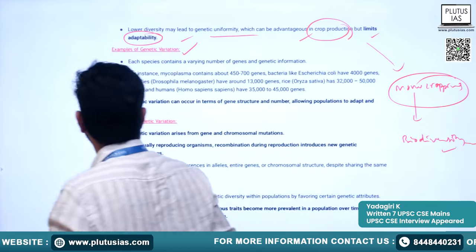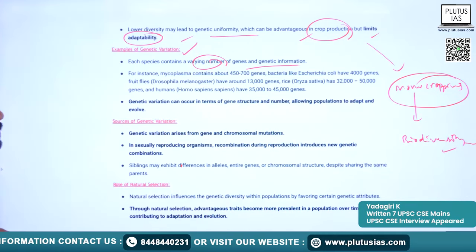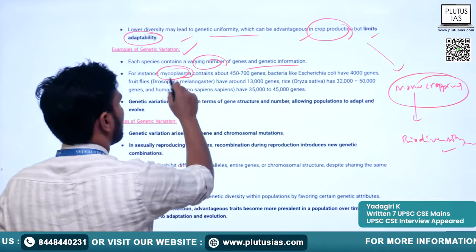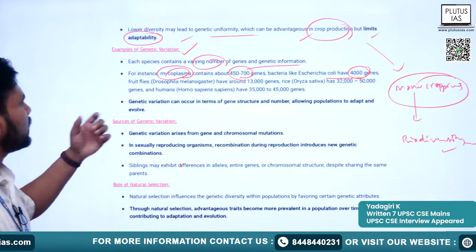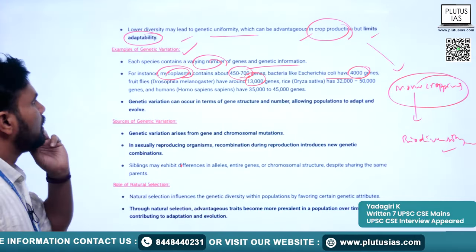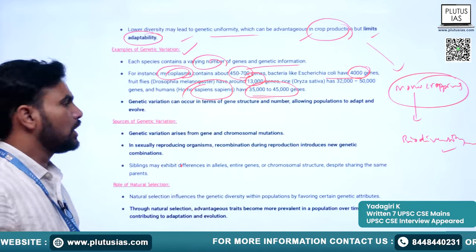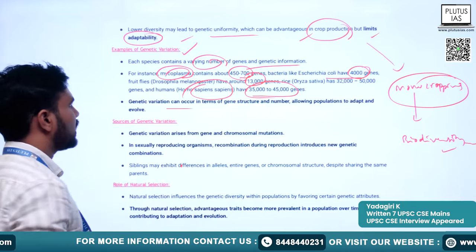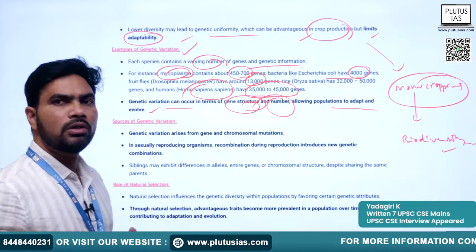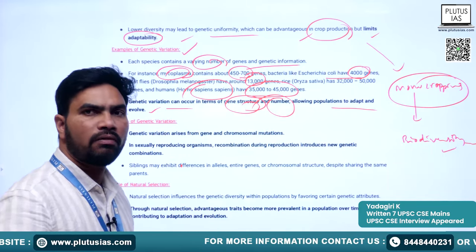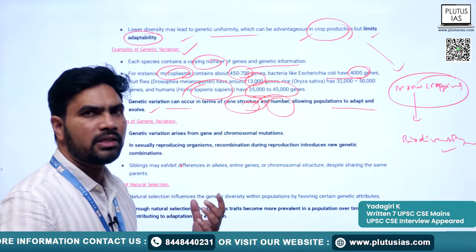Examples of genetic variation: each species contains a varying number of genes. Mycoplasma contains about 450–700 genes; bacteria like Nostoc or Coley have 4,000 genes; fruit flies have around 1,500 genes; and humans have 35,000 to 45,000 genes. Genetic variation in terms of gene structure and numbers allows populations to adapt and evolve — it is because of gene diversity that human beings have survived and thrived throughout the ages.